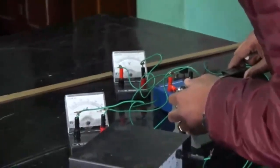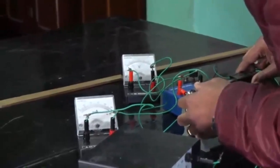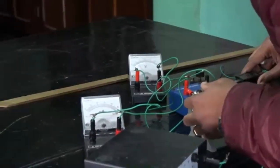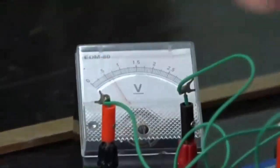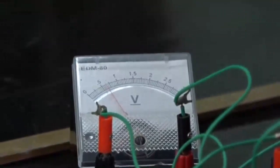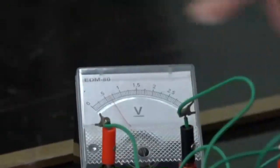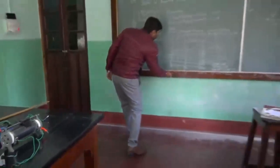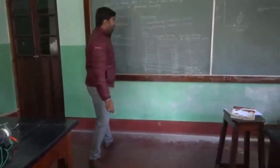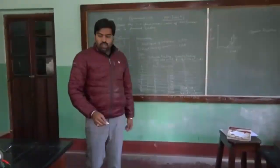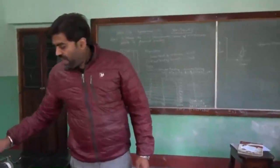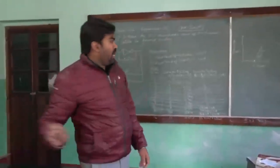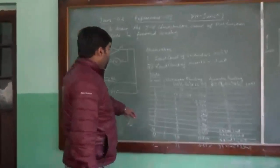For the 12th division, you can see it has now exceeded the maximum limit of this milliammeter, so we will stop here. We have got our required readings up to this 12th reading.